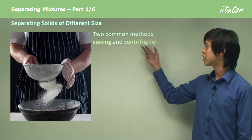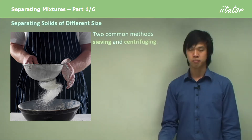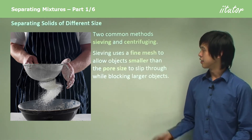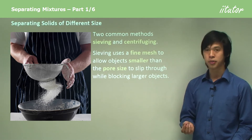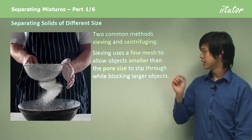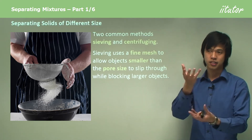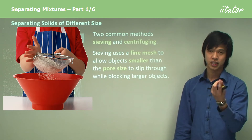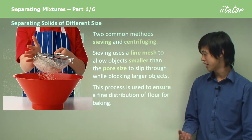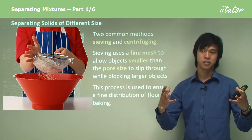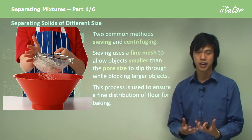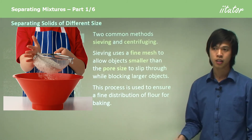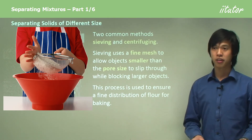For those who bake regularly, you would use a sieve to separate flour in order to get a very fine mixture at the bottom. Sieving uses a fine mesh to allow particles smaller than the pore size — the size of the gaps in the metal mesh — to slip through, while blocking the larger objects. The larger particles are stopped by the small holes and very fine particles get through because they're smaller than those holes. This process is used to ensure a fine, even distribution of flour for baking, so you don't get any big clumps.